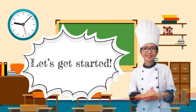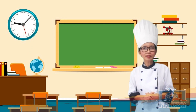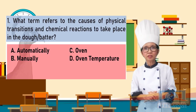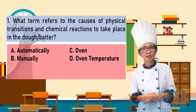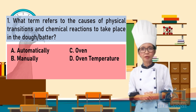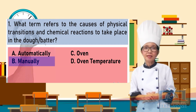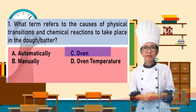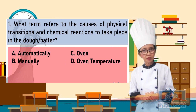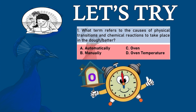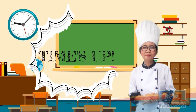Let's get started! Here is the first question: What term refers to the causes of physical transitions and chemical reactions to take place in the dough or batter? A. Automatically, B. Manually, C. Oven, D. Oven temperature. Time is up!